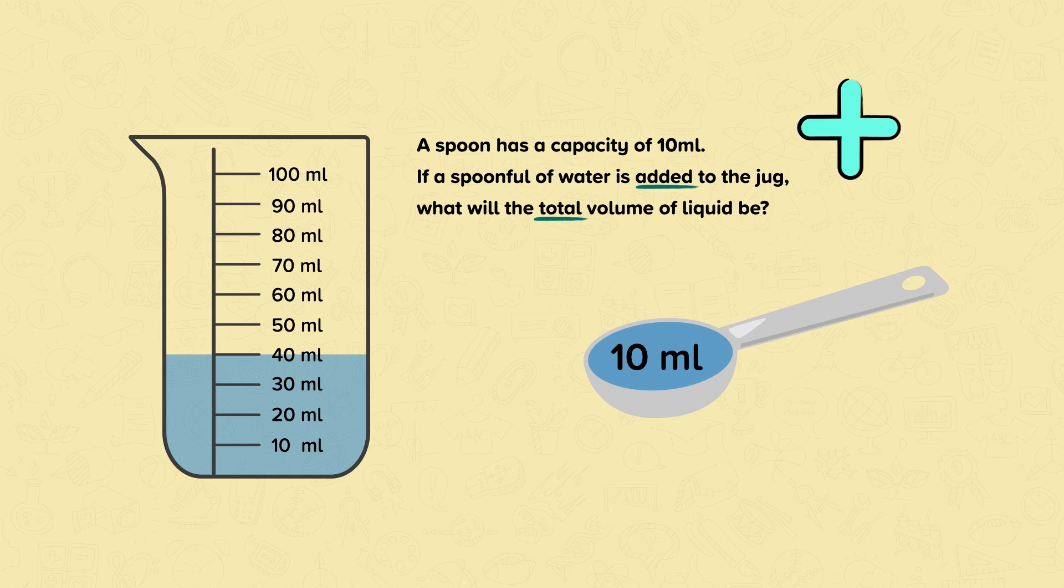So first of all, we need to know how much water is in the jug. If we look at the scale, we can see that there are 40 milliliters of water in the jug. And remember, we're adding a spoonful of water, which is 10 milliliters.